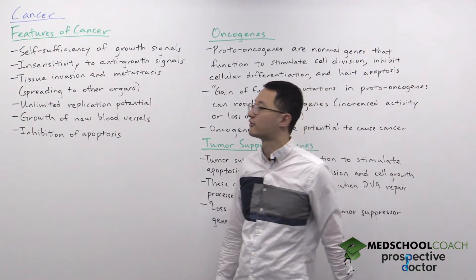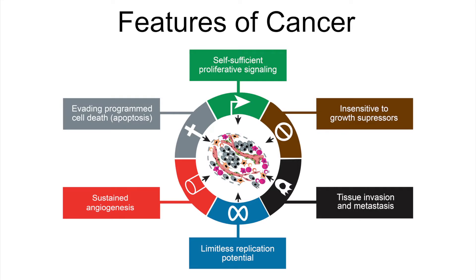You can see all six in this diagram. The first is self-sufficiency of growth signals. Typically, for cells to grow and divide they need signals telling them to do so. Cancer cells are self-sufficient in that they're able to produce their own growth signals, which helps allow them to grow and divide uncontrollably.